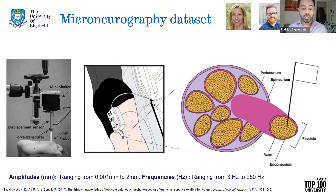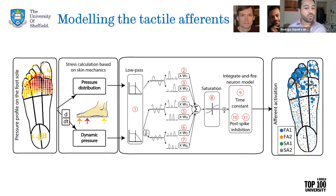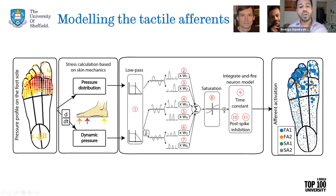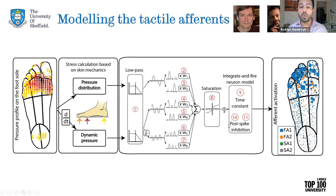Using that data, we built a model that takes into consideration the specific skin mechanics of the foot and delivers pressures to a quasi-static model of the skin, which is then given to integrate-and-fire neurons that have 12 parameters that you can interchange, including a low-pass filter. Parameters two through seven are time-varying. All of those are integrated into a saturation parameter to account for the adaptation of those tactile afferents.